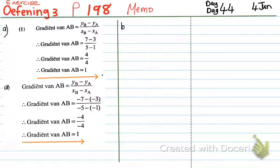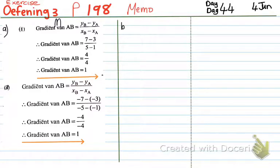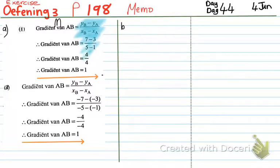Let's quickly read the question: it says calculate the gradient of the line segments through the following points. So it's going to be AB. They give us the coordinates of A and B: 1, 3 and 5, 7. To work out the gradient I write small letter m: the gradient of AB will be delta Y over delta X, so YB minus YA over XB minus XA, or Y2 minus Y1 over X2 minus X1. Then I substitute the values in: 7 minus 3 over 5 minus 1. 7 minus 3 is 4, 5 minus 1 is 4, and 4 over 4 gives me 1.